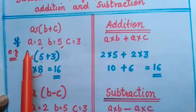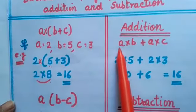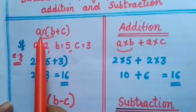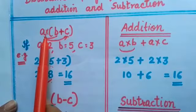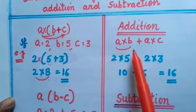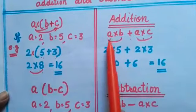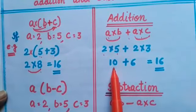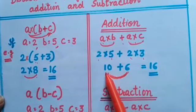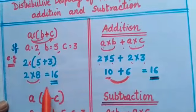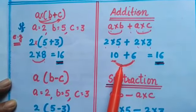But if we distribute A to B and C separately, we get A into B plus A into C. With A=2: 2 into 5 gives 10, and 2 into 3 gives 6. Adding 10 and 6 gives 16 again. So distributive property is applicable over addition.